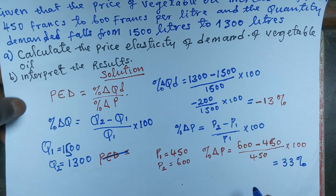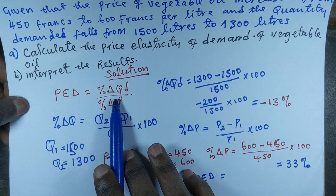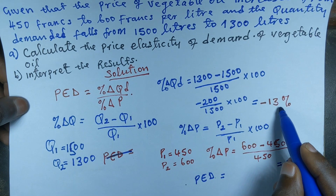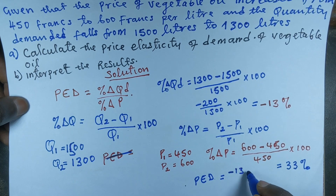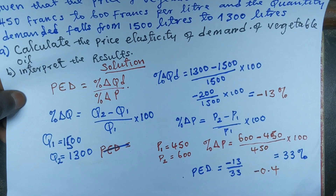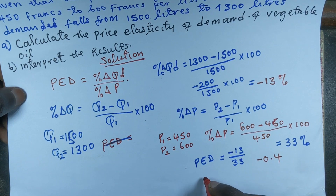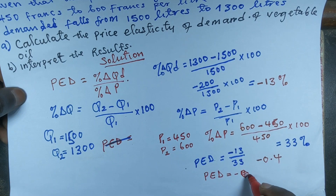What we need to do now is calculate PED, the price elasticity of demand, which is equal to percentage change in quantity over percentage change in price. Our percentage change in quantity was minus 18 percent and our percentage change in price is 33 percent. So we have minus 18 divided by 33 percent, which gives us minus 0.4. Price elasticity of demand is equal to negative 0.4.